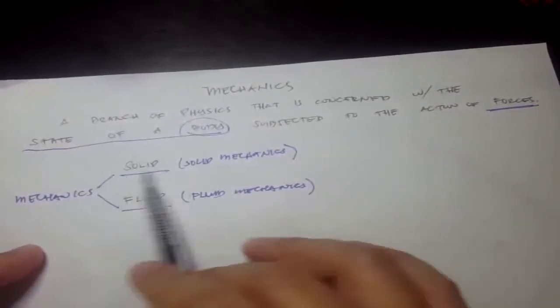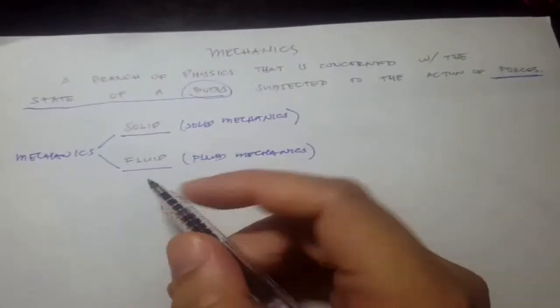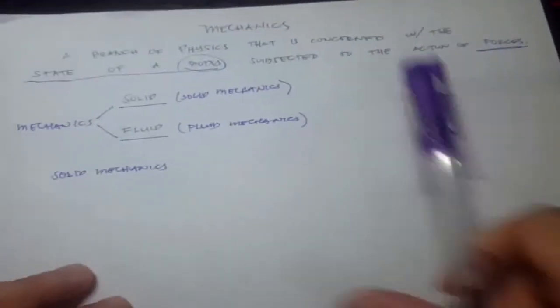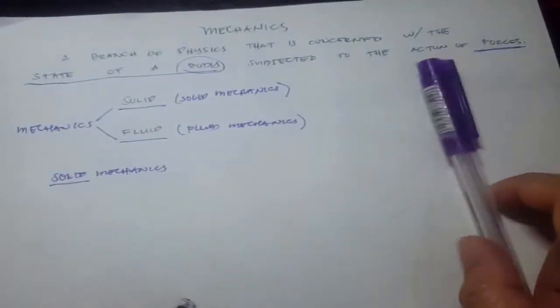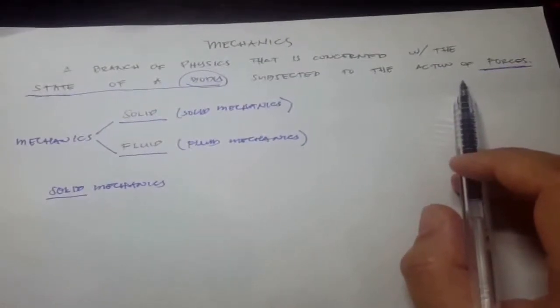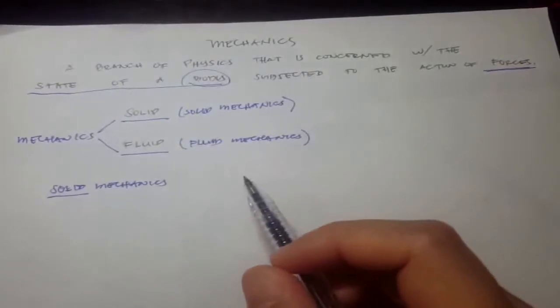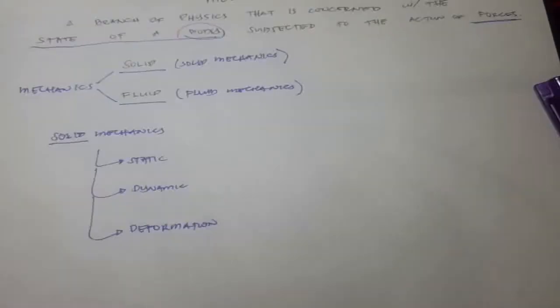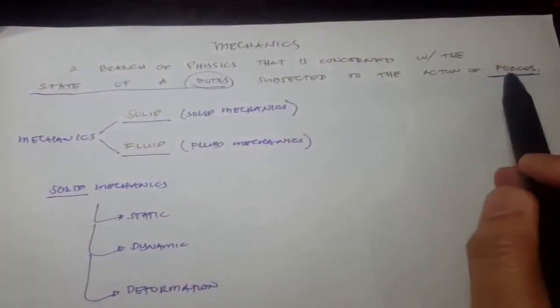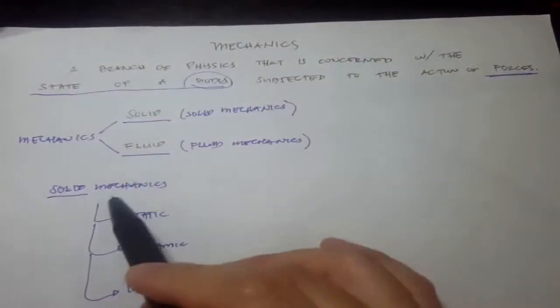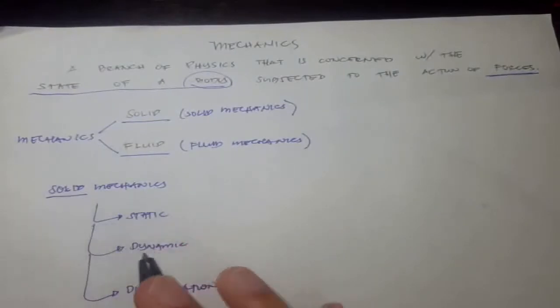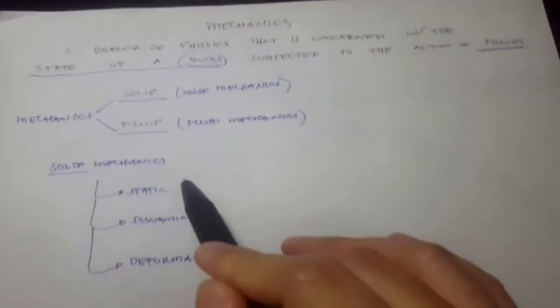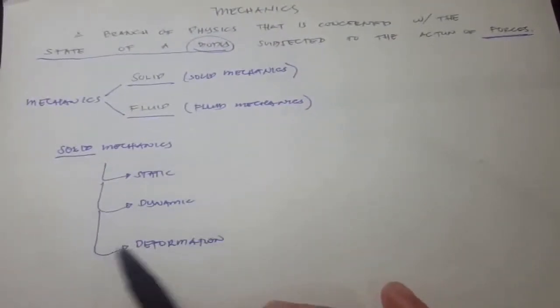In this video, we will tackle more about the solid one. For solid bodies, the response of the object can either be a static response, dynamic response, or a deformation response. When forces are applied to solid bodies, the body might respond in one of these three ways: either static, dynamic, or deformation.